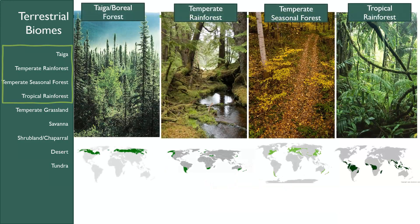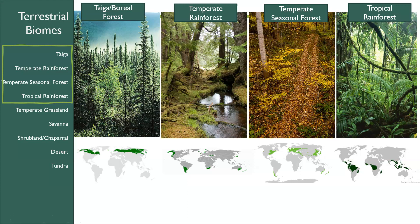If we take our first four types of forests — the taiga, the temperate rainforest, the temperate seasonal forest, and the tropical rainforest — you see they all look a little bit different in terms of the species that are there. Remember, these are different biomes, so the species adapted to live there should be different. And if we look at where they're found, they're all found in different parts of the globe.